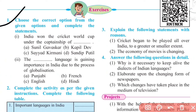Question 1: Choose the correct option from the given options and complete the statements. First, India won the Cricket World Cup under the captainship of — the answer is B, Kapil Dev. Second, the blank language is gaining importance in India due to the process of globalization — the answer is C, English.